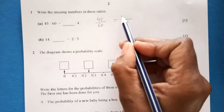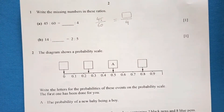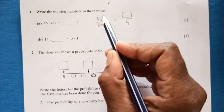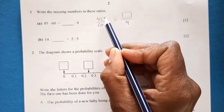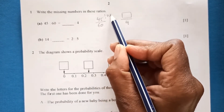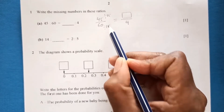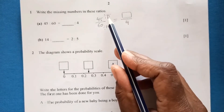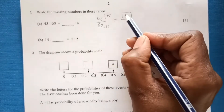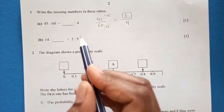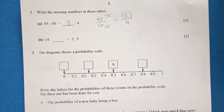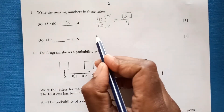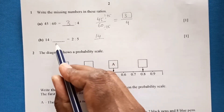If you divide 45 and 60, they are both multiples of 15, so we can divide by 15. 15 times 4 is 60, and 15 times 3 is 45. So in the answer column we write 3.